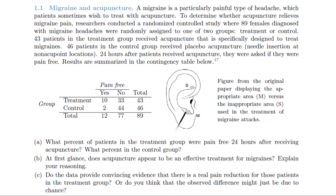In the textbook they say a migraine is a particularly painful type of headache which patients sometimes wish to treat with acupuncture. To determine whether acupuncture relieves migraine pain, researchers conducted a randomized control study where 89 females diagnosed with migraine headaches were randomly assigned to one of two groups: a treatment group and a control group.